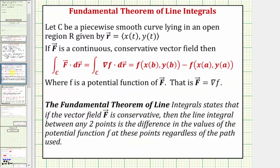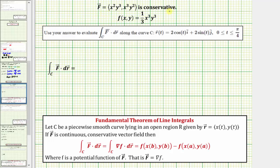Let's review the fundamental theorem of line integrals. If C is a piecewise smooth curve lying in an open region R, given by vector function r(t), and if vector field F is continuous and conservative, then the integral along curve C of F · dr equals f(x(b), y(b)) minus f(x(a), y(a)), where f is the potential function. This theorem tells us that if a vector field is conservative, the line integral between any two points is the difference in potential function values at those points, regardless of the path used.